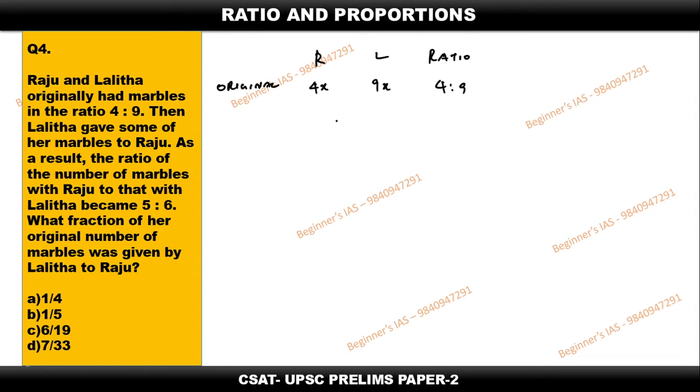Then Lalitha gave some of her marbles to Raju. We don't know how many, so we are considering that as 'a'. Now the ratio will become 5:6.